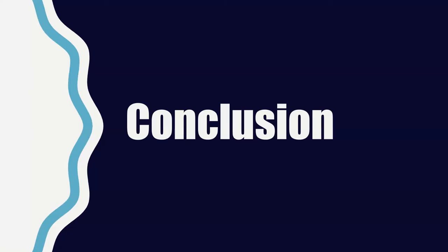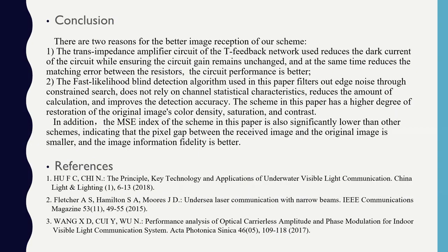The sixth part is the conclusion. Finally, we can make a summary. There are two reasons for the better image reception of our scheme. First, the trans-impedance amplifier circuit of the T-feedback network reduces the dark current of the circuit while ensuring the circuit gain remains unchanged, and at the same time reduces the matching error between the resistors. The circuit performance is better.